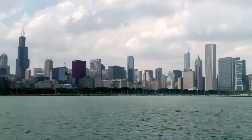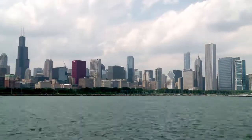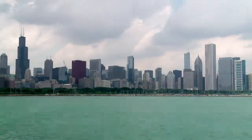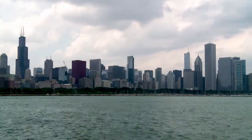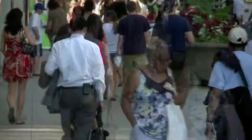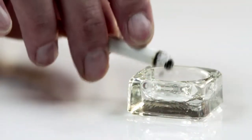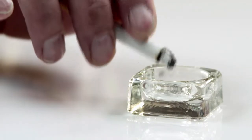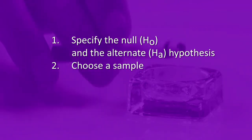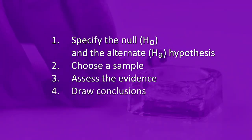To provide an example of hypothesis testing, we're going to use the NESARC dataset — a representative sample of 43,093 adults in the United States — to evaluate whether or not there's an association between a diagnosis of major depression and how much a person smokes. We're going to work through the example using the four steps: specifying the null and alternate hypotheses, choosing a sample, assessing the evidence, and drawing conclusions.